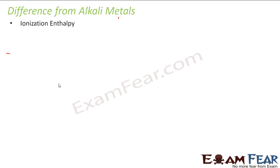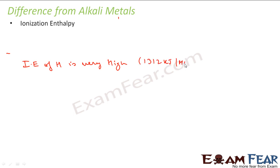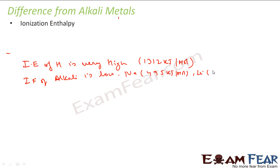Now let's talk about the differences between hydrogen and alkali metals. The first difference is ionization enthalpy. The ionization enthalpy of hydrogen is very high — it is 1312 kJ/mol. For alkali metals, it is low: for sodium it is 495 kJ/mol, for lithium it is 520 kJ/mol, and for potassium it is 418 kJ/mol. So hydrogen's ionization enthalpy is much higher than that of alkali metals.